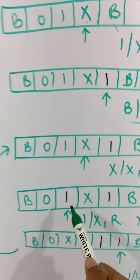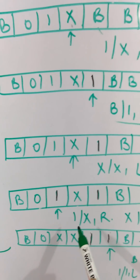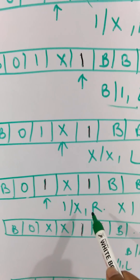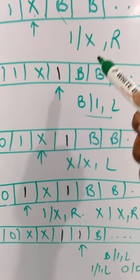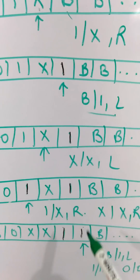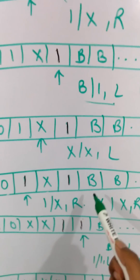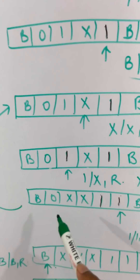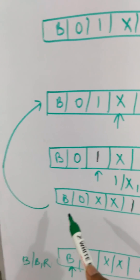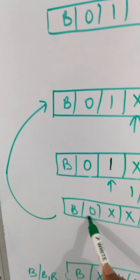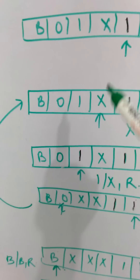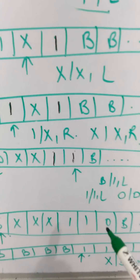Then we will replace that blank space with 1 and then move to the left. At left we have x which we just replaced. So we will move to the left position of that x and get this character, which is 1. We will again replace this 1 with x and move to the right position, do the same thing, replace the blank space with 1, and then move to the first character.